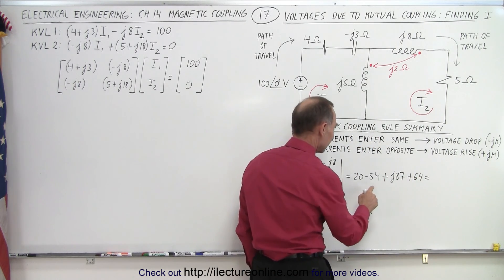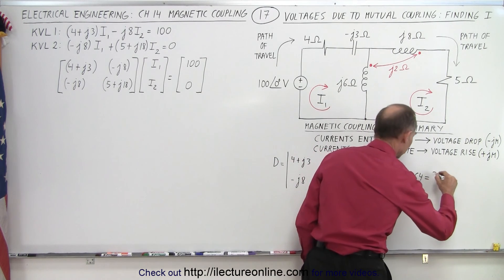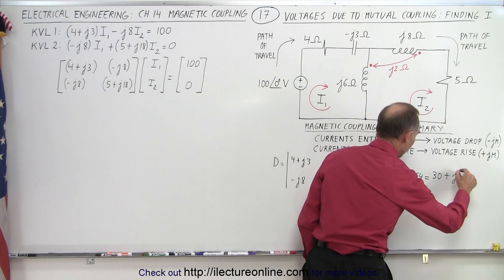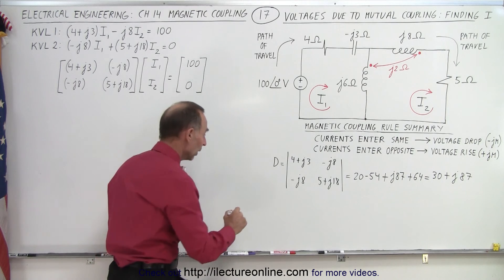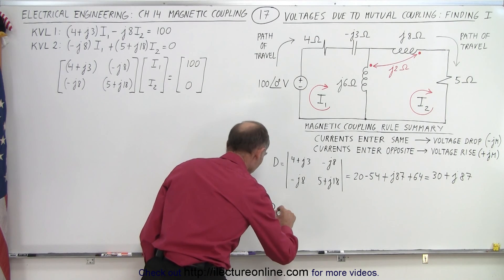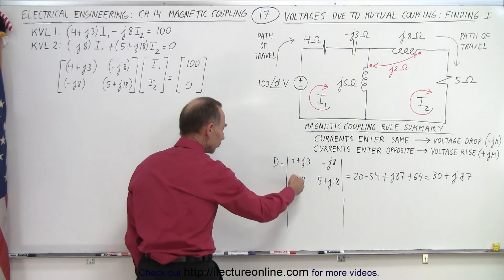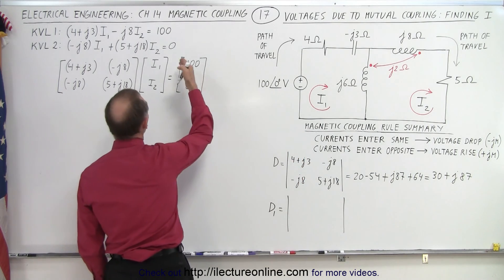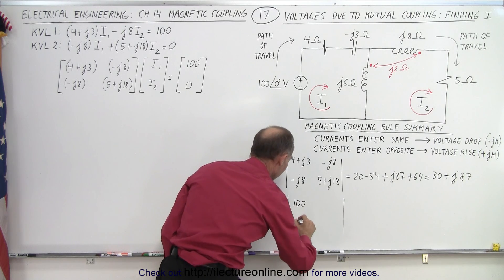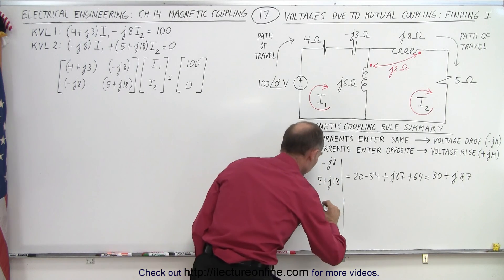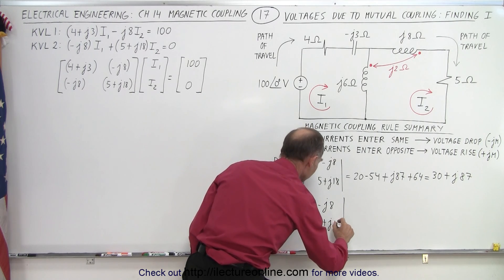So we have minus 54 plus 64, that's plus 10 plus 20, that would be 30 plus J87. So that's the determinant. Now we find D1. D1, which is equal to the same determinant, but with the first column replaced by these two values right here. So we have 100 and 0, we keep those two.